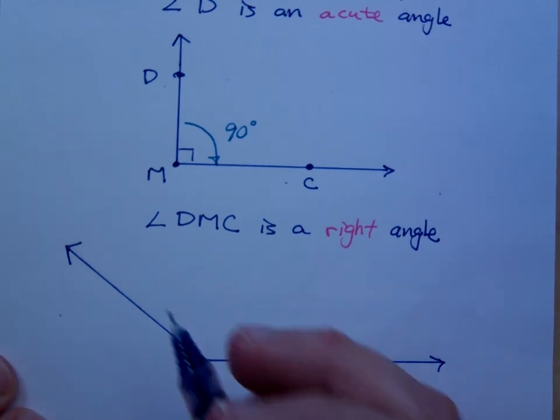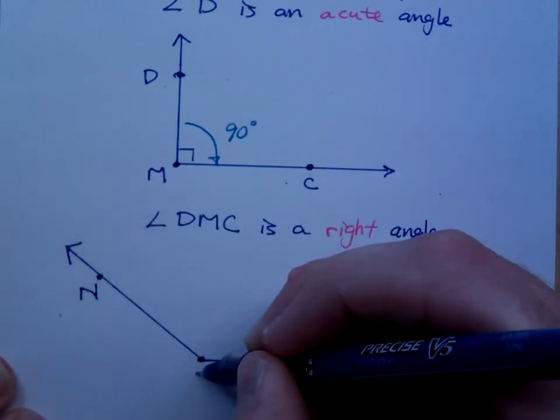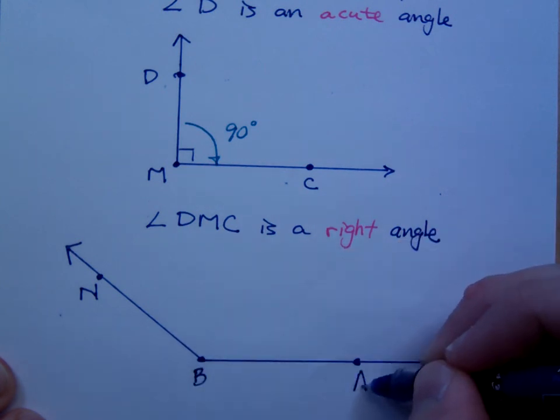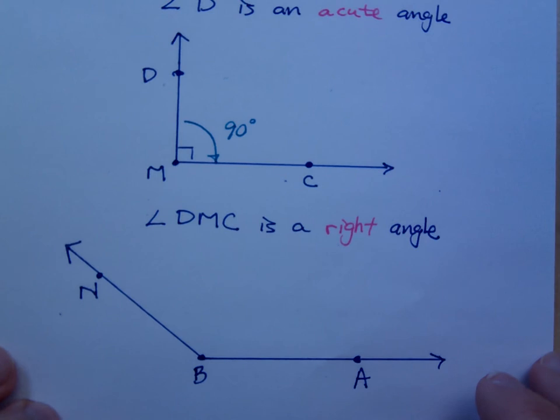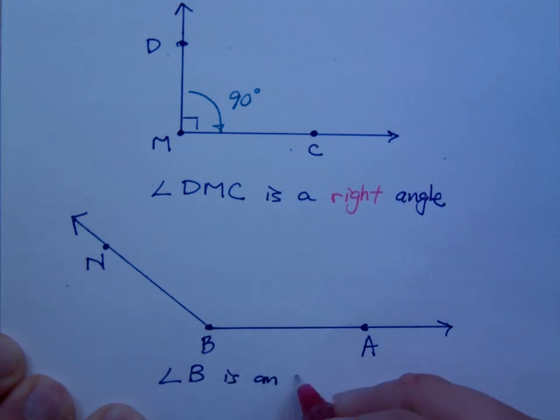Right. So, if I draw these guys right here. So, we would say here that angle, what? How would you call this one? You could say NBA. You could say ABN. You could also say what? You say B, right? Because this is the only angle that has this vertex. So, you could say angle B is an obtuse angle.